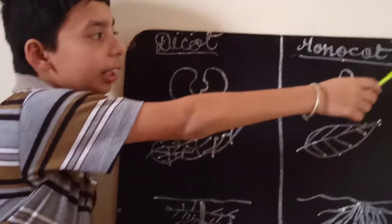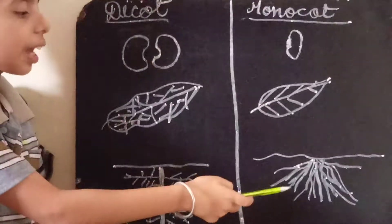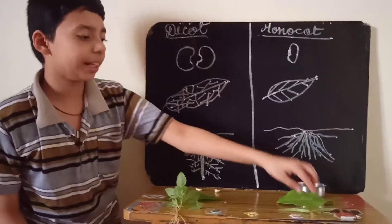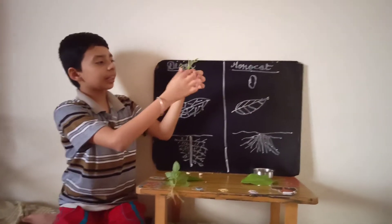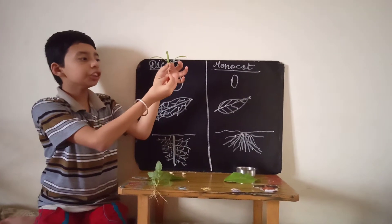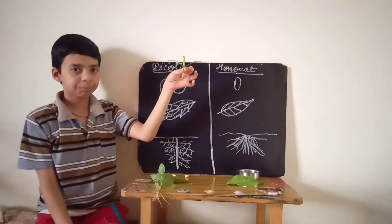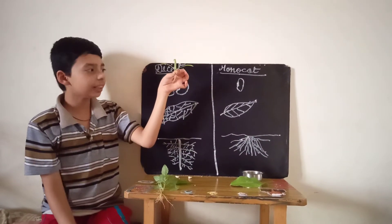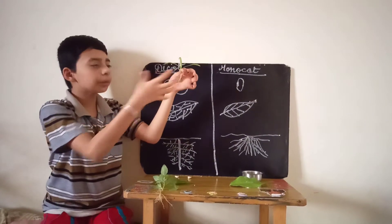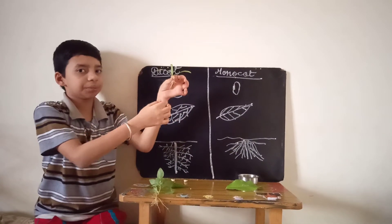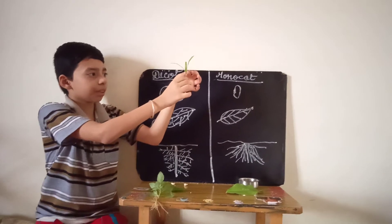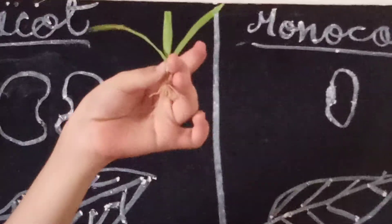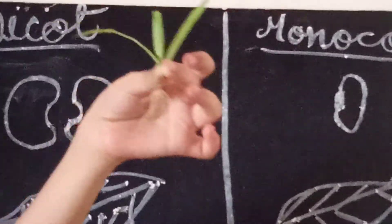Now I will explain how a monocotyledon plant's root will be. It has a fibrous root system. In a fibrous root system, simply at the end of the stem a bunch of roots arise. It will not have a tap root system — no primary, secondary, or tertiary roots. Just a bush-like structure, a bunch of roots arising from the end of the stem. Grass is the best example of a monocotyledon with a fibrous root system.